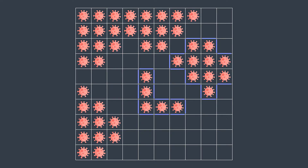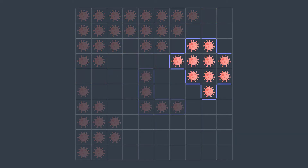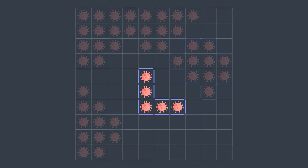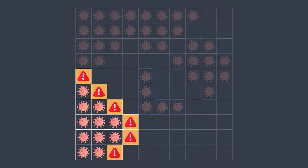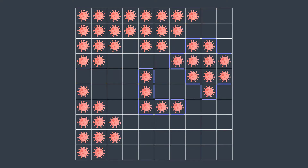When the virus spreads again, the first and last areas merge and we have only three areas. The danger of the first one is six. The most dangerous area is the first one; we surround it with walls and need 14 walls to do so.